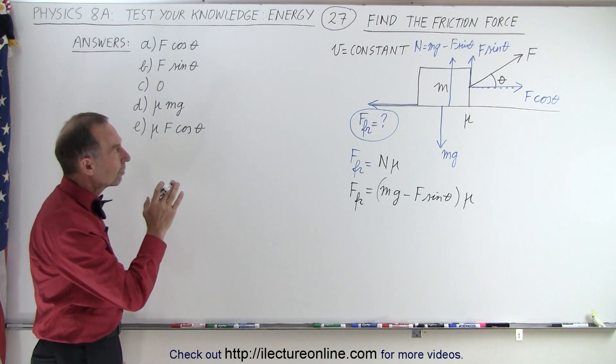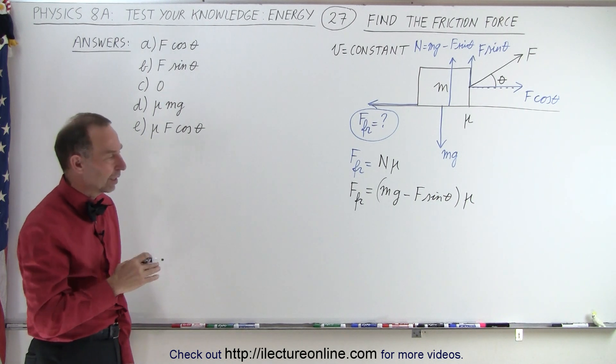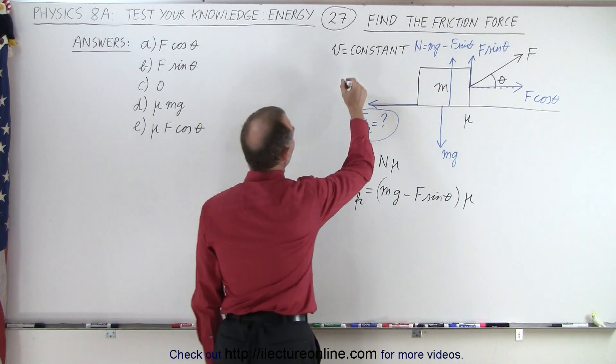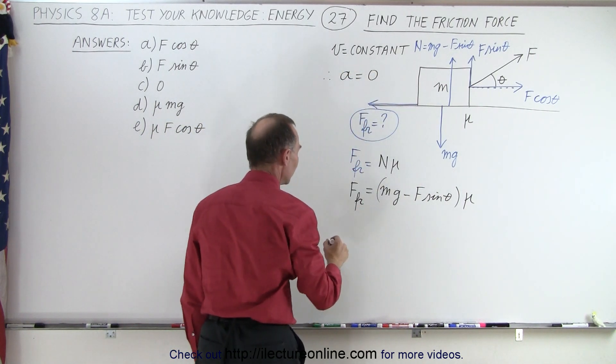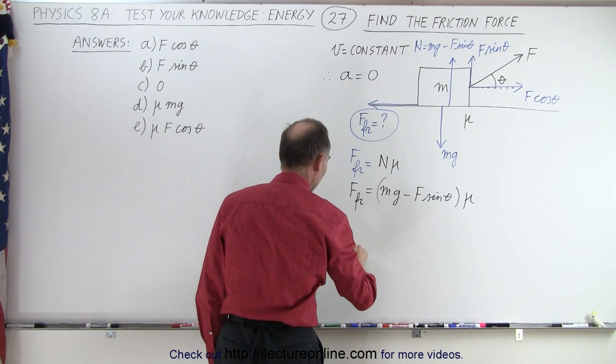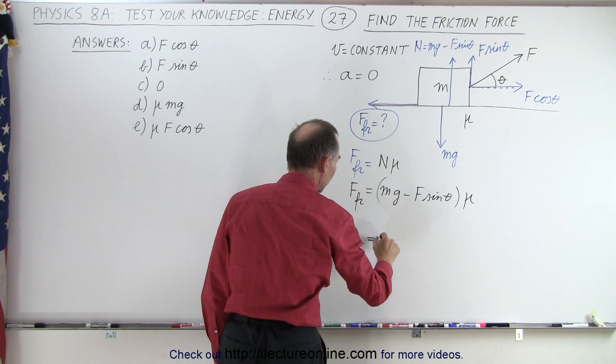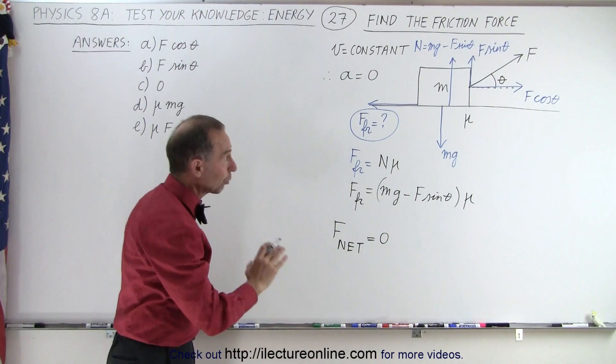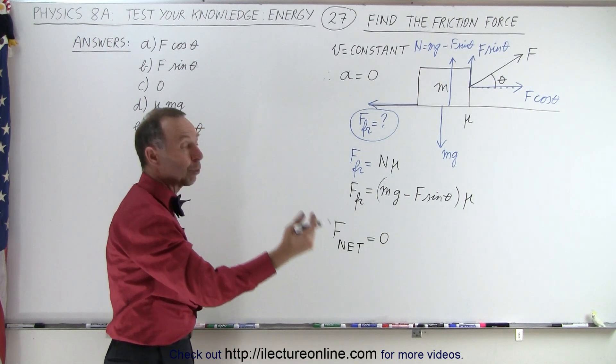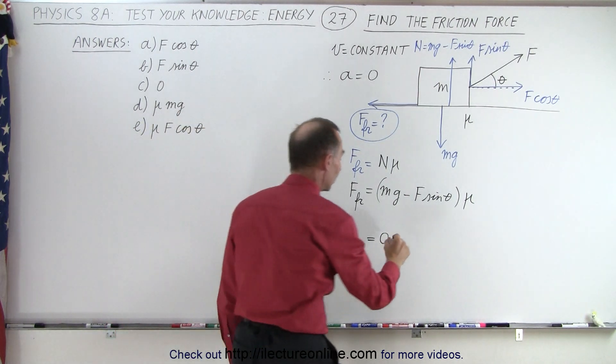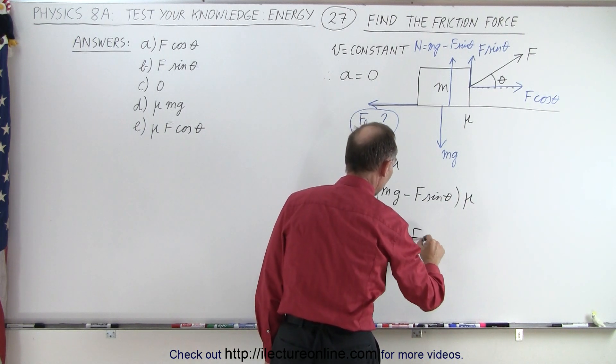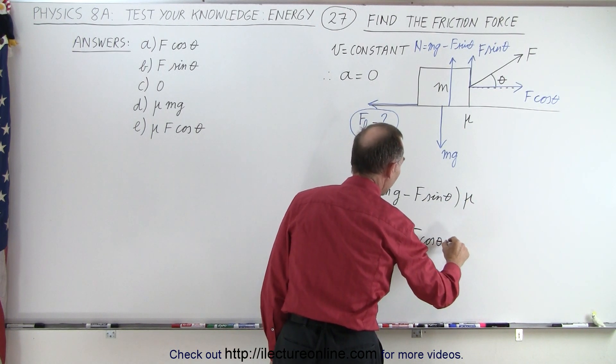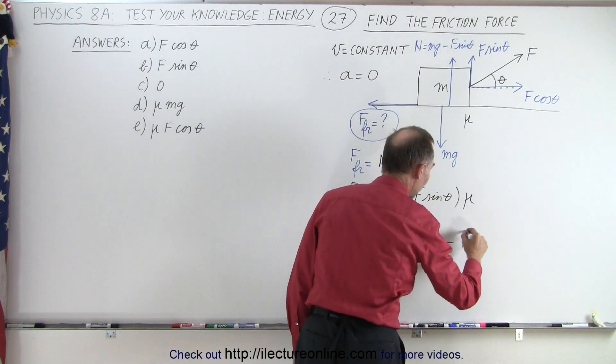But the clue here is that the velocity is constant. If the velocity is constant, that means that the acceleration must be equal to zero. Which means that F net in the x direction must equal zero. That means the force to the right must equal the force to the left. Which means that if I call the right a positive force that would be F times the cosine of theta minus the force to the left which would be the friction force.